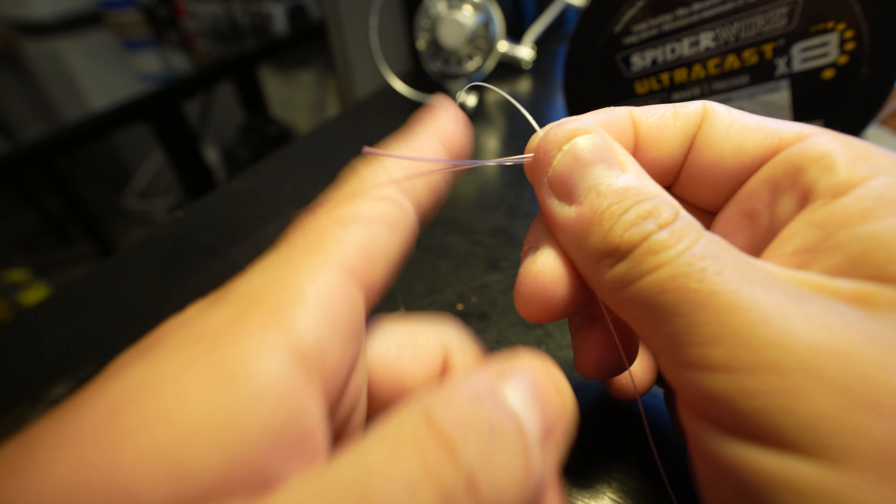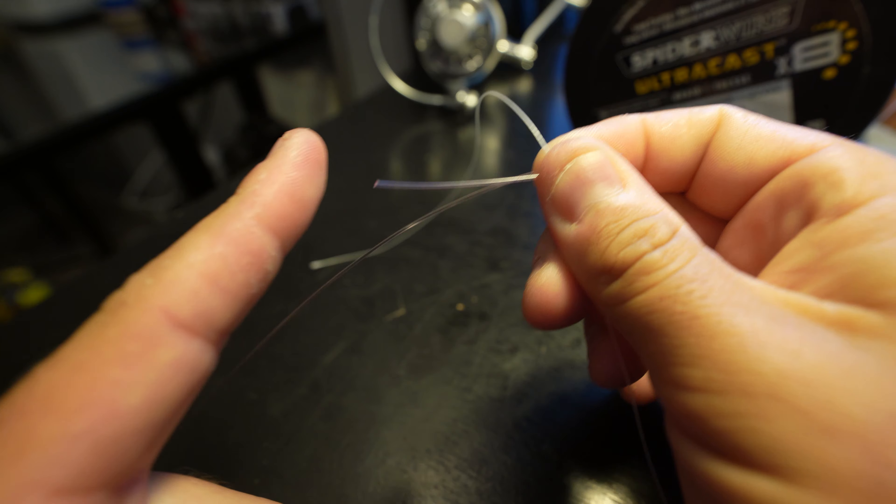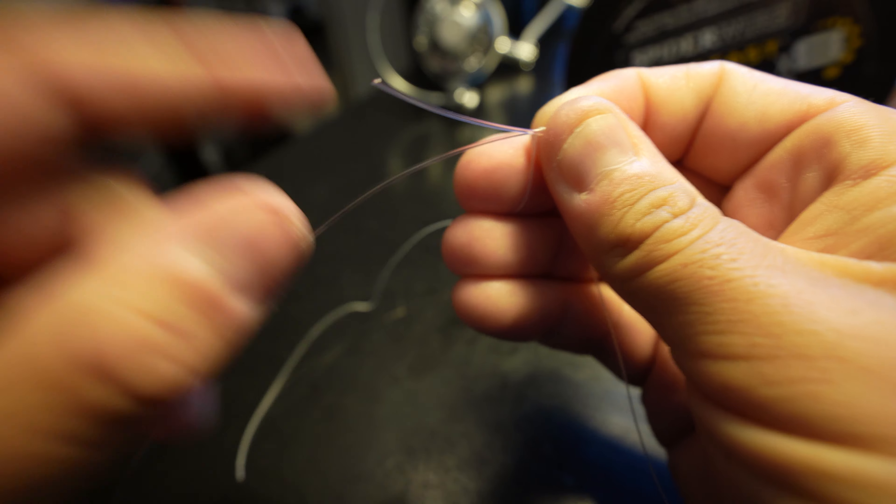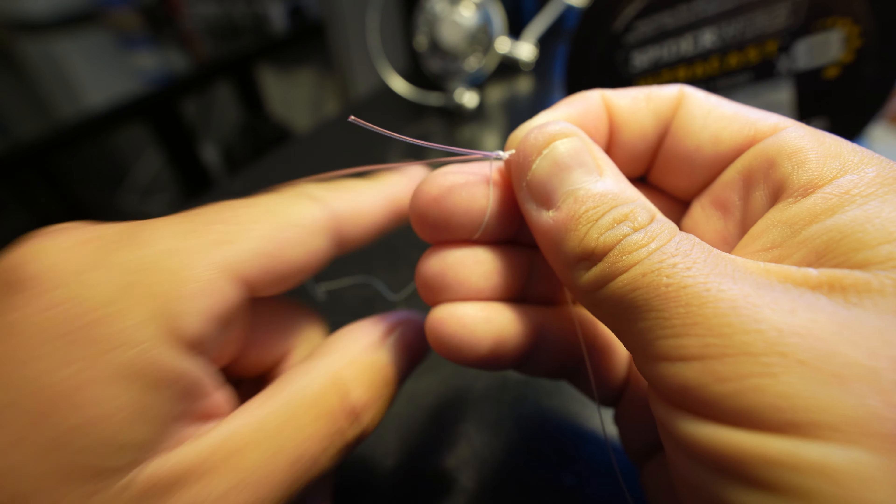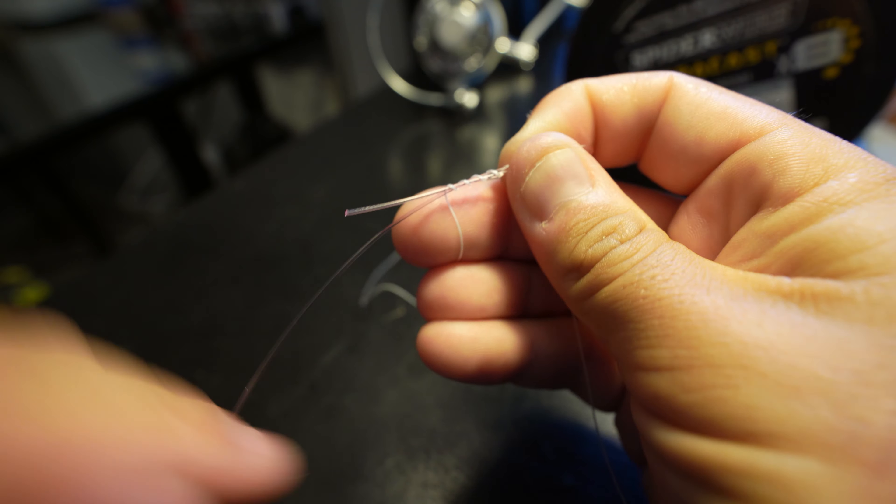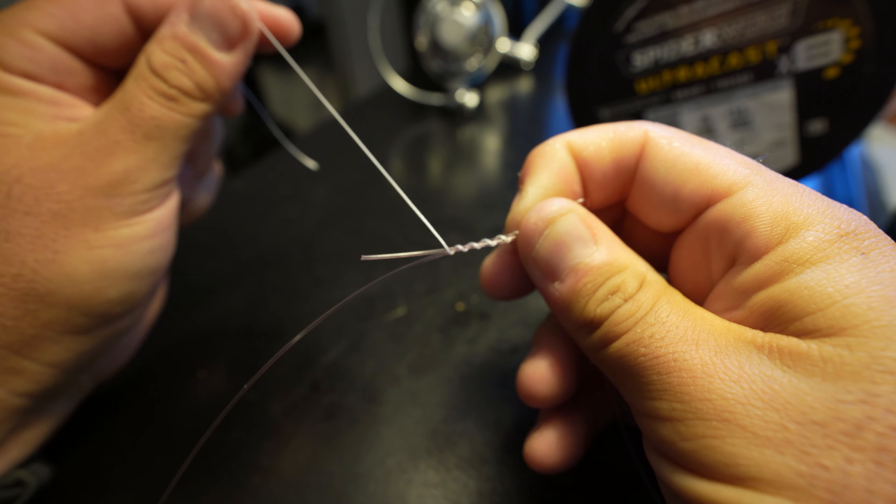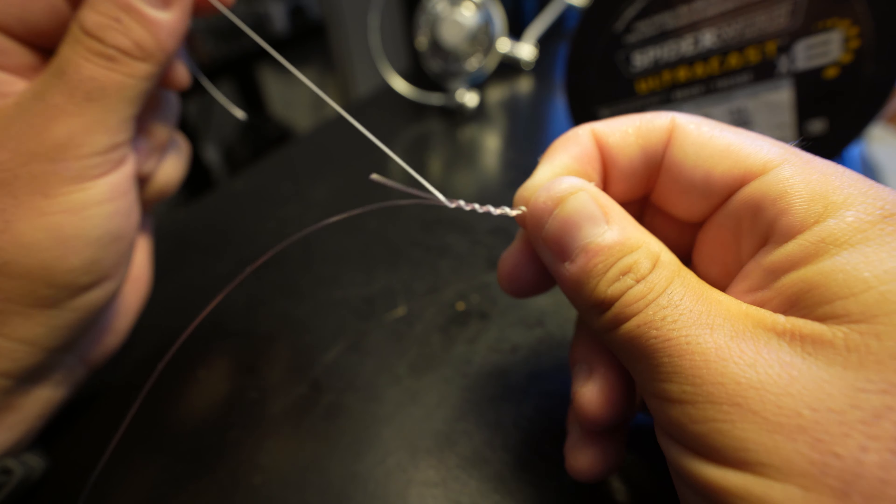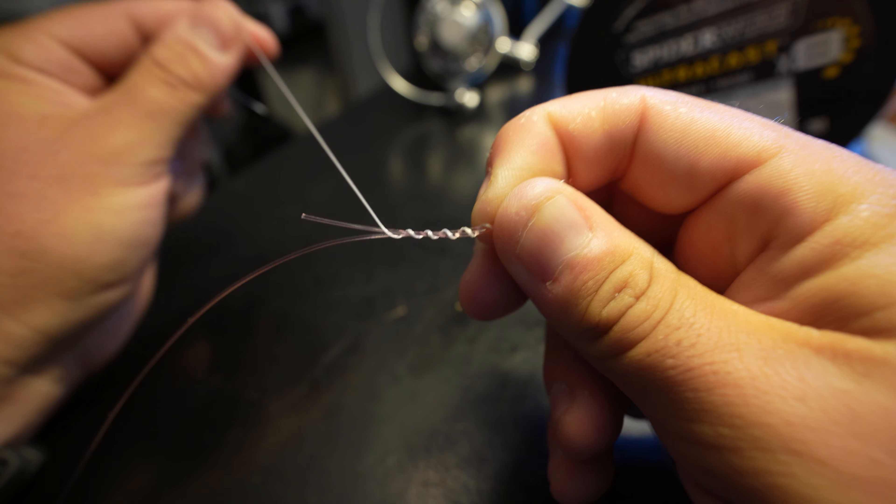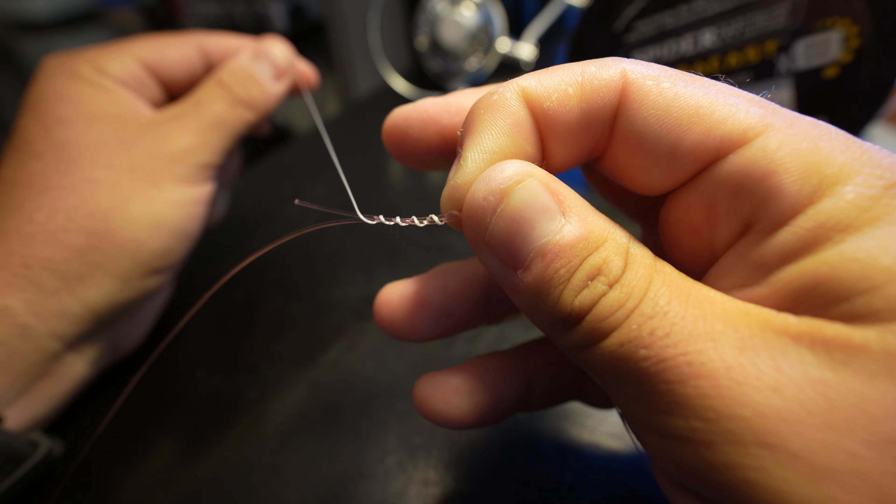All you're going to do is wrap that braid around this line about six to eight times. I'm going to do six for this tutorial: one, two, three, four, five, and six. So now you're here - it should look just like that, very nice and neat. As you do this more, it'll get easier and easier to where you can tie it in 20 seconds or so.